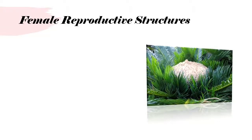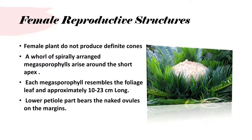Female reproductive structure: female plants do not produce definite cones. A whorl of spirally arranged megasporophylls arises around the shoot apex. Each megasporophyll resembles the foliage leaf and is approximately 10 to 23 centimeters long. The lower petiolar part bears naked ovules on the margins.